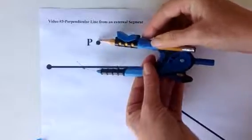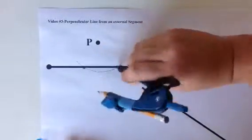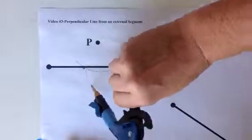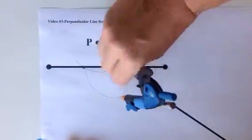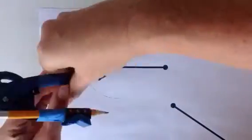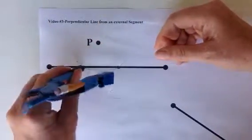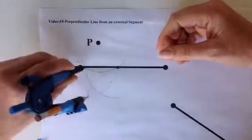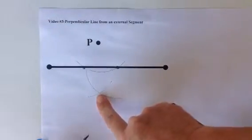Now keeping that same distance, move to this point of intersection and do a tilt-drag motion. Then flip it over and come to this side, tilt and drag. You should have a point of intersection there.